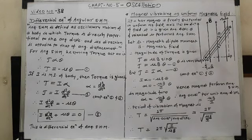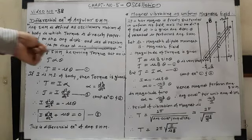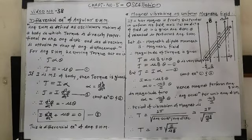To repeat: angular SHM is defined as an oscillatory motion of a body in which the torque is directly proportional to its angular displacement and its direction is opposite to that of the angular displacement. This is the angular SHM.